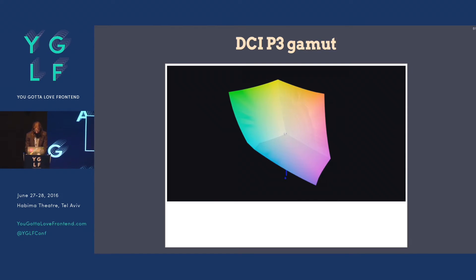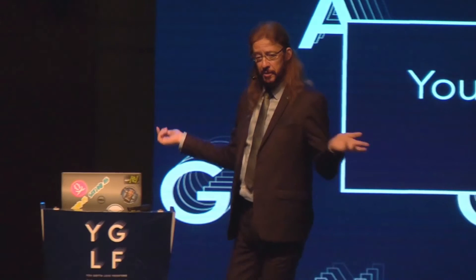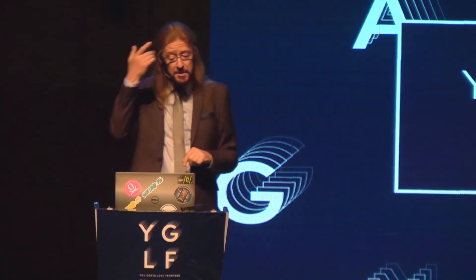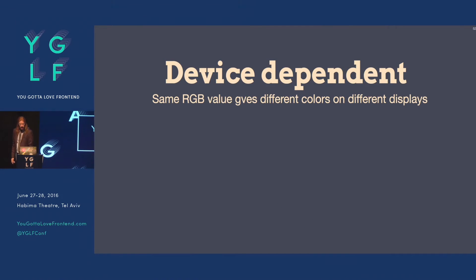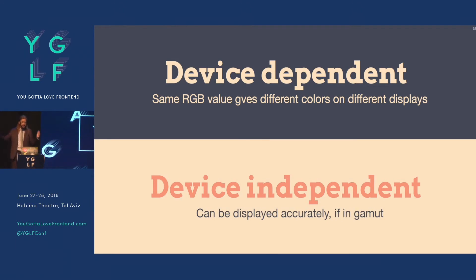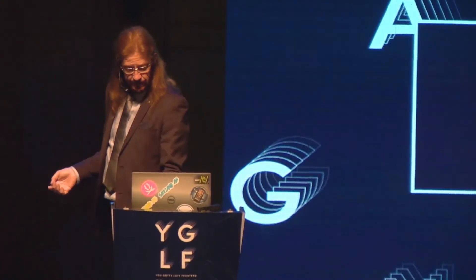The problem with device-dependent colors is that you'll display the same color on different machines and they look different. What we actually want is device-independent color: if it's within the gamut, it can be displayed correctly. But you have to know what values to feed the monitor — it's not going to be the same for each screen.